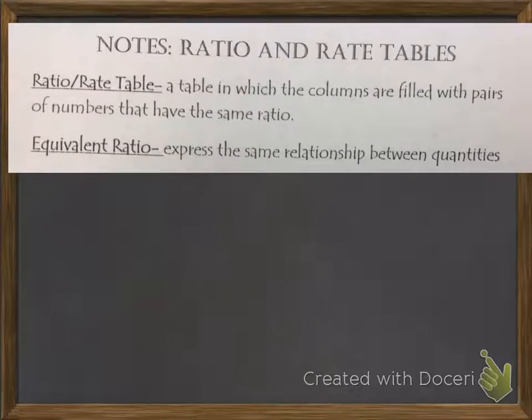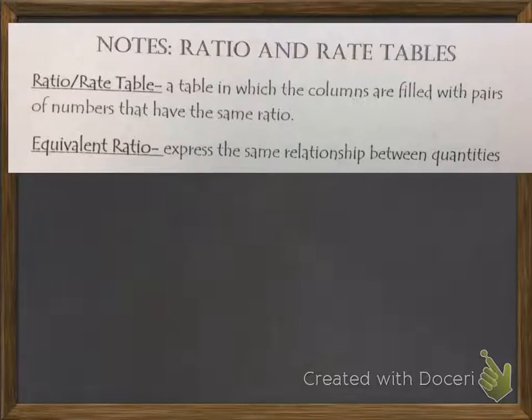We have a couple of definitions. A ratio or rate table is a table in which the columns are filled with pairs of numbers that have the same ratio, so these pairs of numbers are proportional. An equivalent ratio expresses the same relationship between quantities.